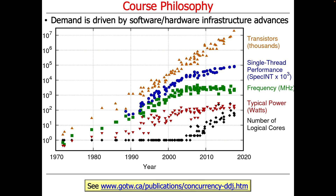A lot of the motivation for parallel computing, microservices, and cluster computing is driven by advances in software and hardware infrastructure over the past couple of decades. I'm sure you're all familiar with Moore's law, which really means that every 18 to 24 months, the number of transistors available on a computing hardware chipset will double. For many years — from the 70s up to the early 2000s — Moore's law also meant that every 18 to 24 months, computer clock speeds would double.